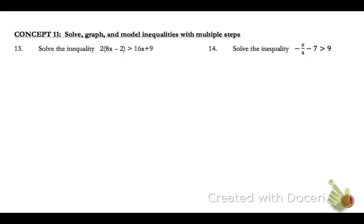You just take each problem one at a time, and number 13, see that you've got a parenthesis, so that means you're going to distribute, multiply that number across. So 2 times 8 is 16x, 2 times negative 2 is negative 4. Then just bring down the right side of the inequality.